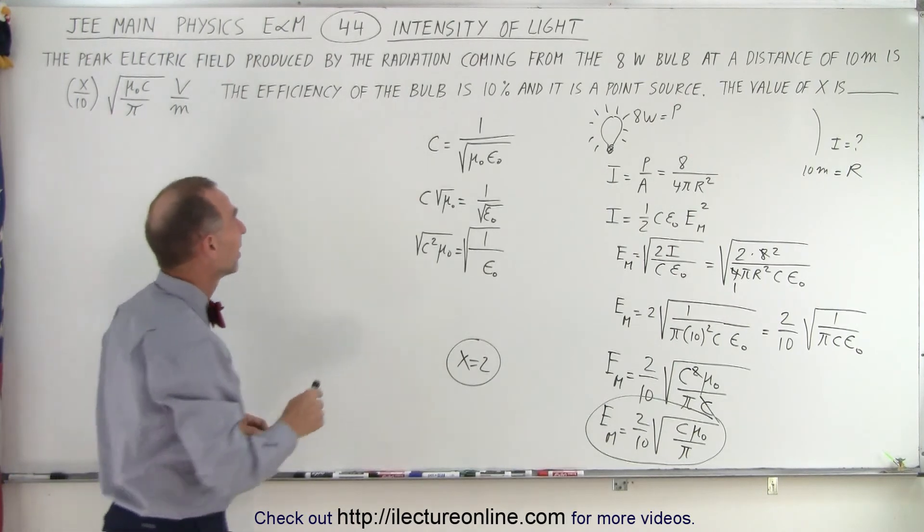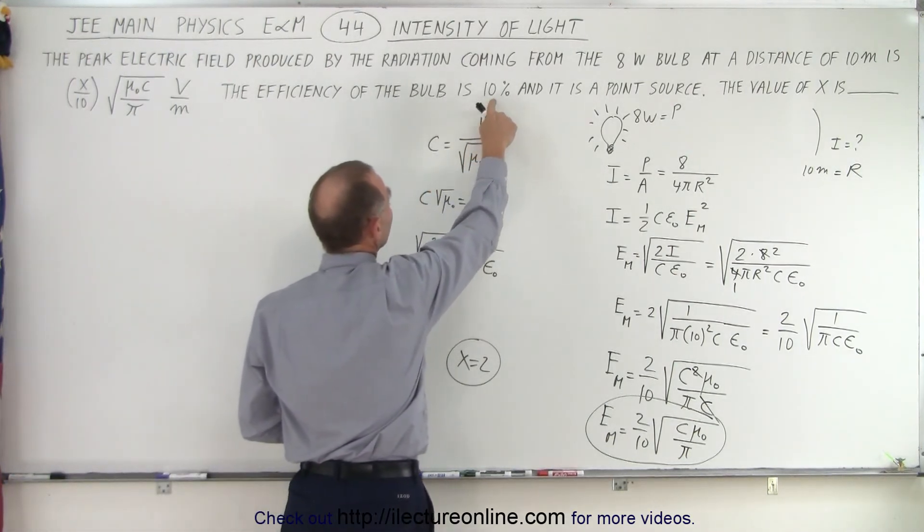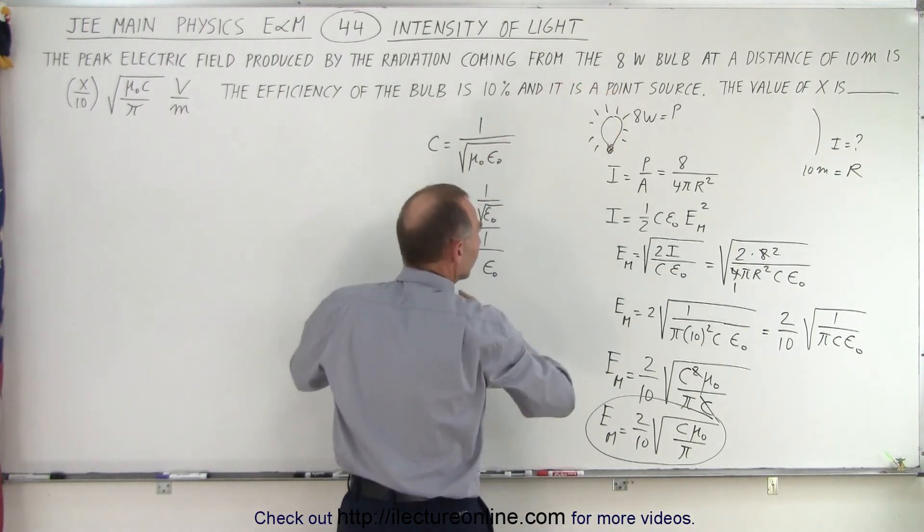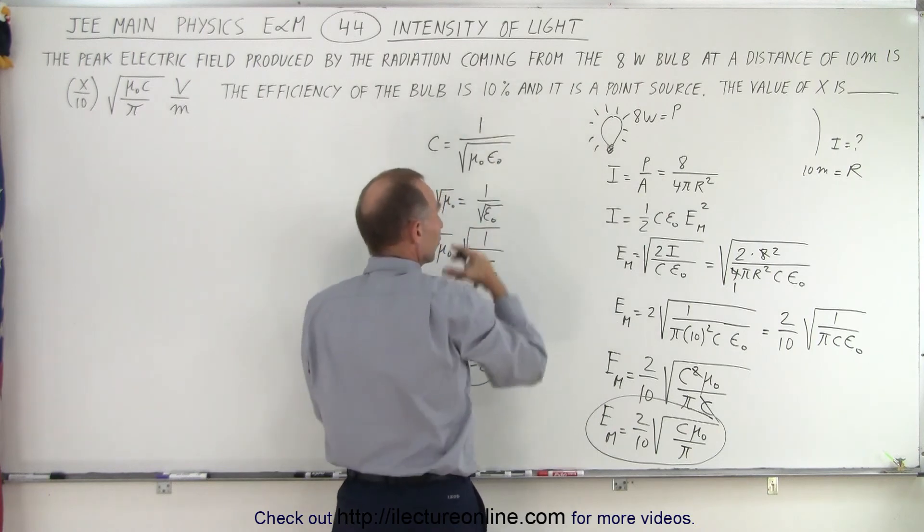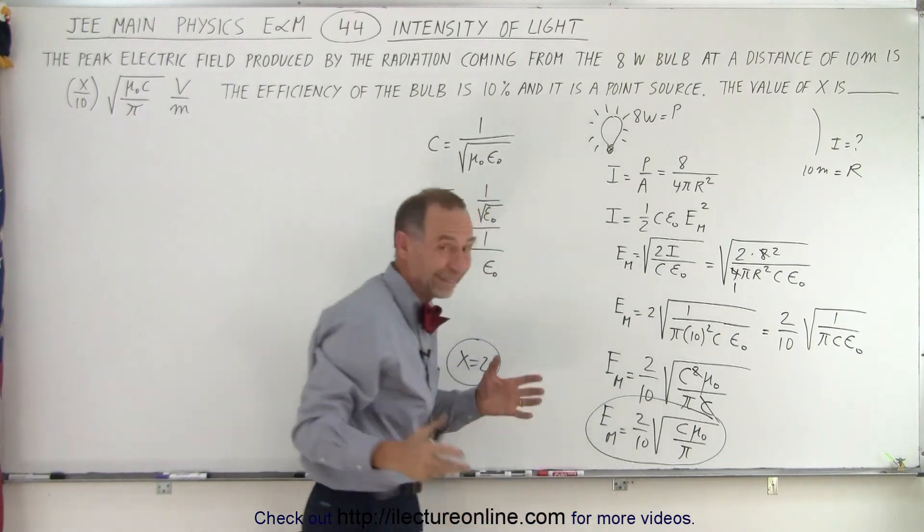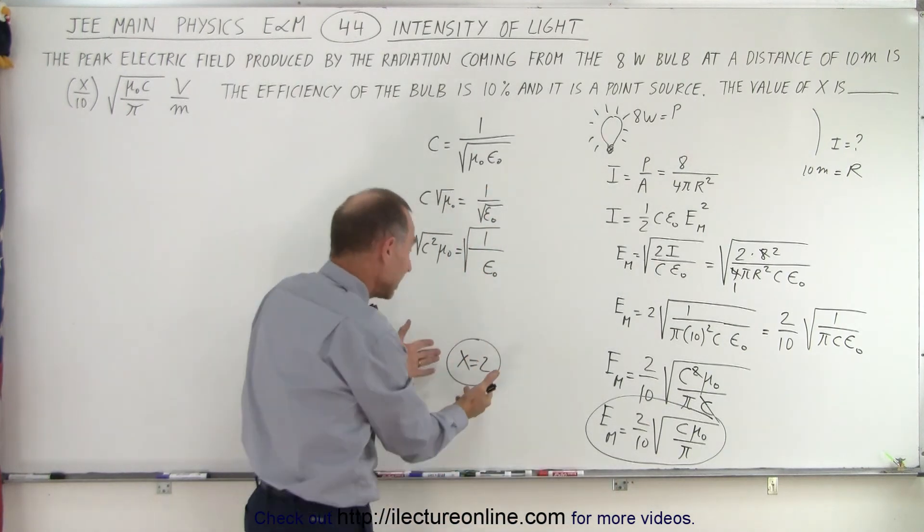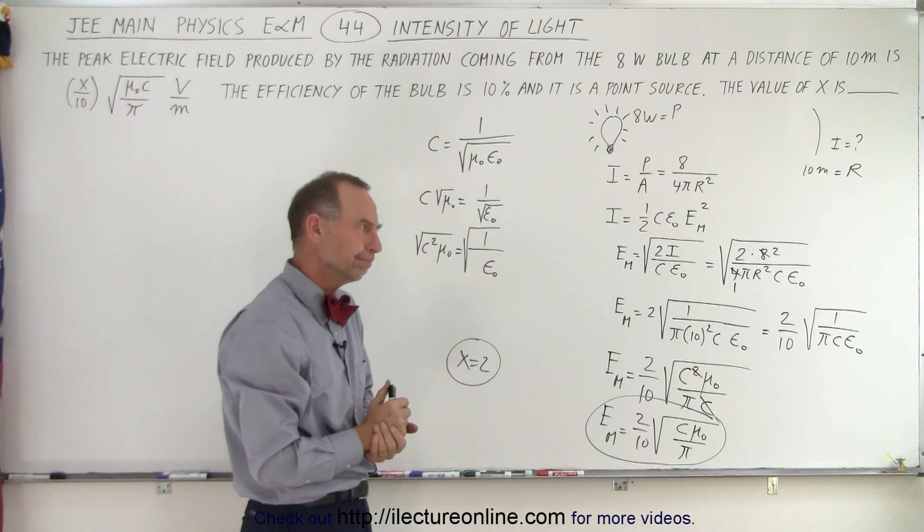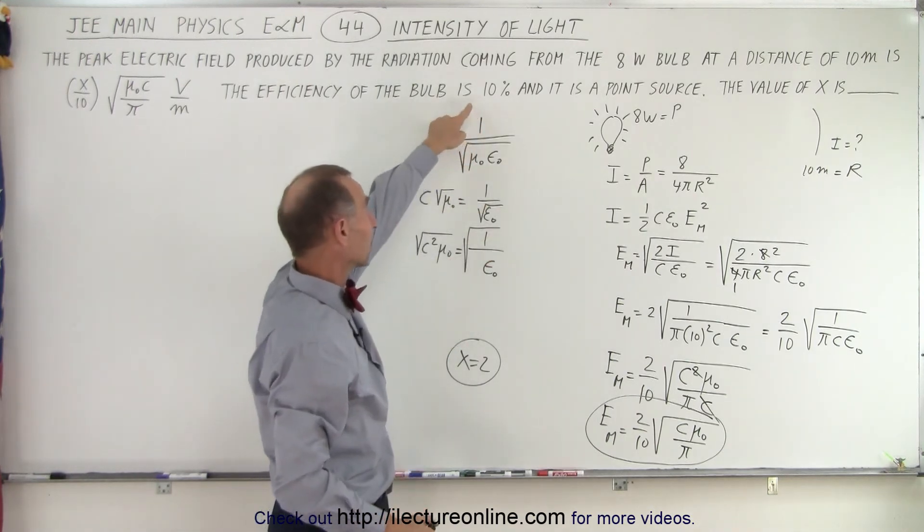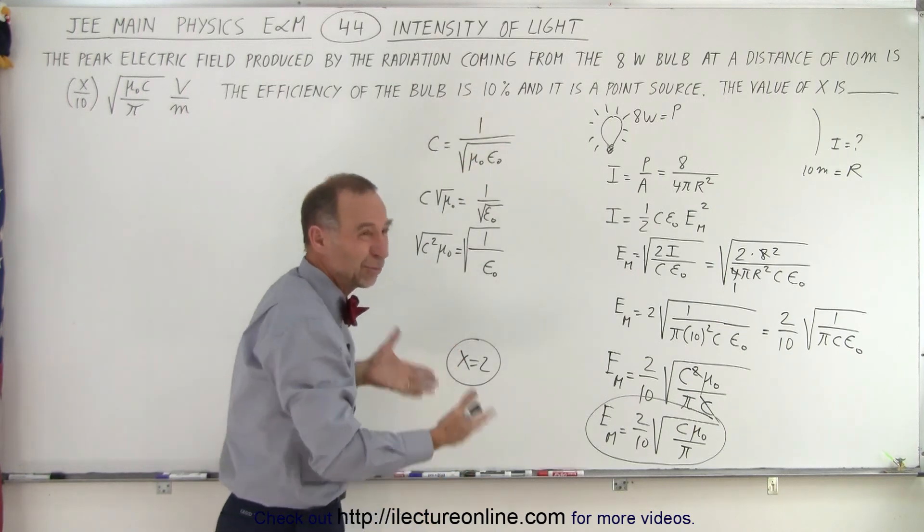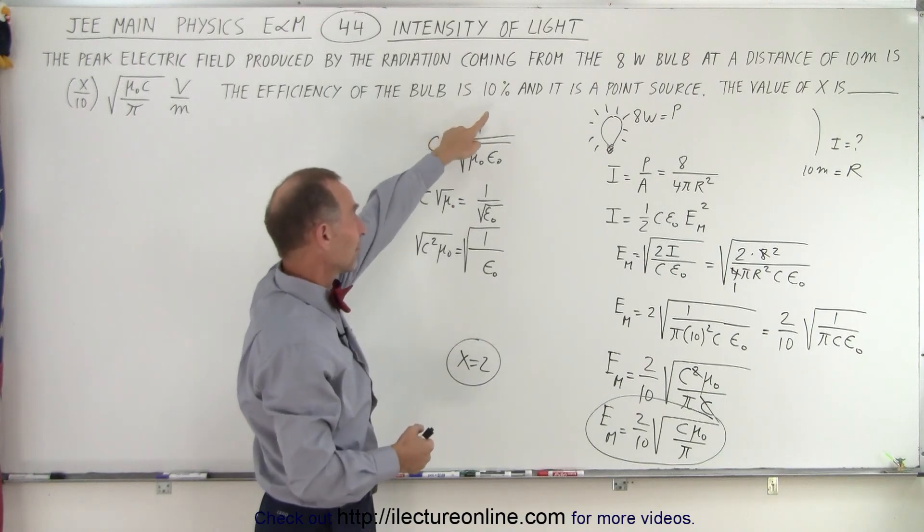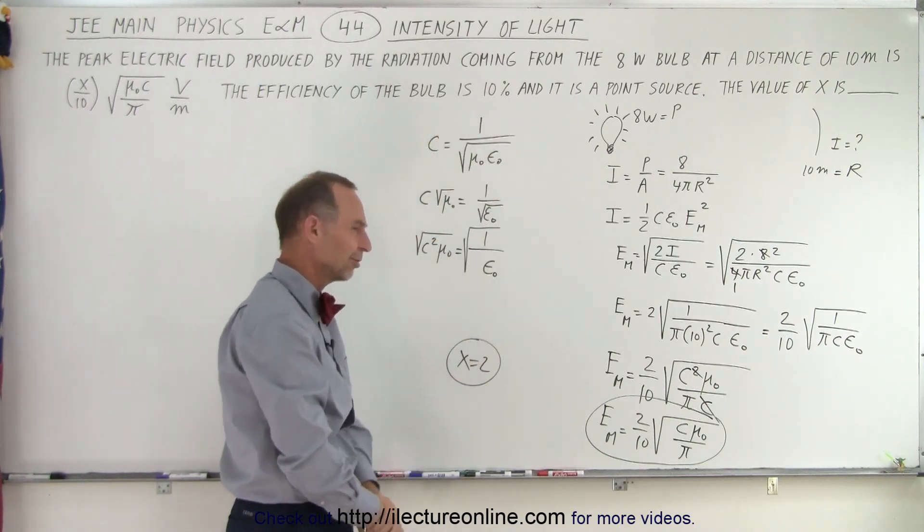But notice if I take this 10% quantity, if this matters, and that means that only 10% of the 8 watts is producing light and the other 90% is producing heat, then I have to multiply the numerator in here by 0.1, the 10%, and then I wouldn't get the answer that I got. So here's the situation that if you do it correctly and you take into account the 10%, you get an answer which should be correct but doesn't match the test answer. And if you do it incorrectly and you ignore the 10%, you get the answer prescribed to this test question.